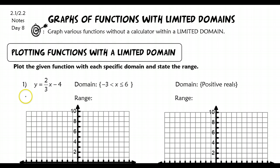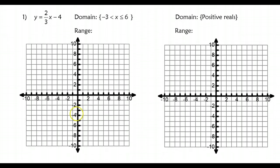Let's take a look at number 1. Number 1 has us plotting a linear function — hopefully you're catching on that this is going to form a line. Now if I were to graph this like normal, I would go to negative 4 at the y-intercept, and go up 2 and to the right 3 repeatedly. In algebra 1, this would have been totally fine — this line would have a domain and range of all real numbers, like we talked about yesterday. But today, we are restricting that domain.